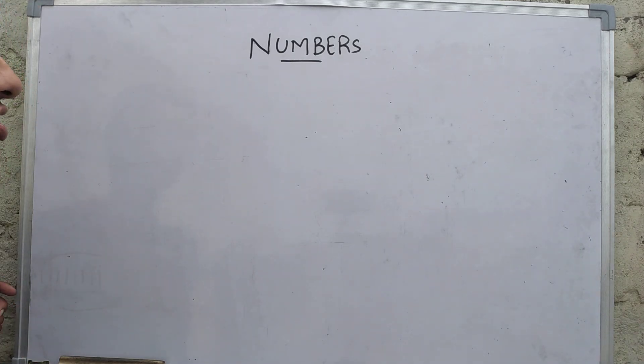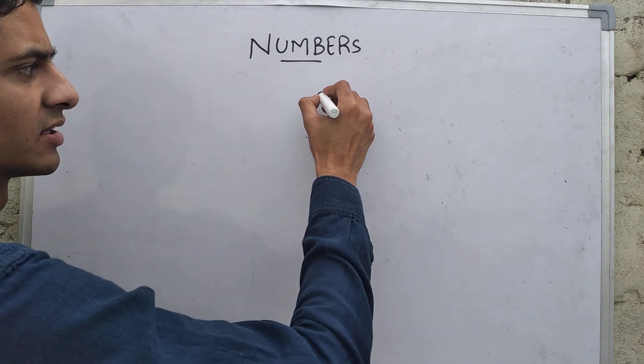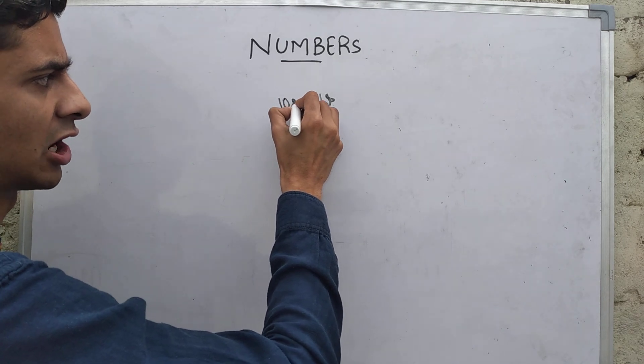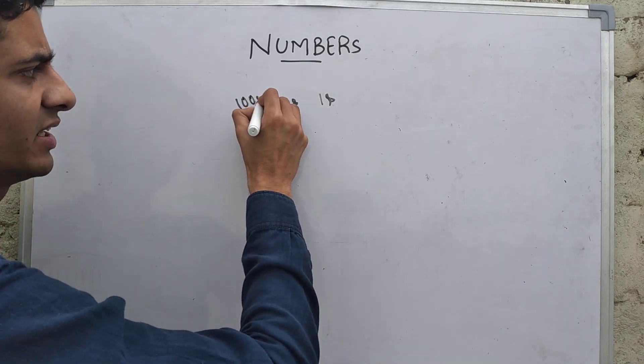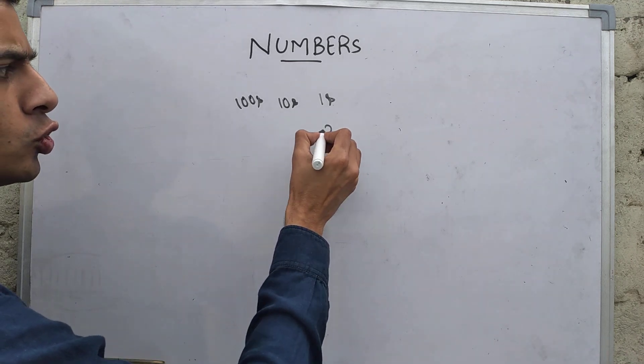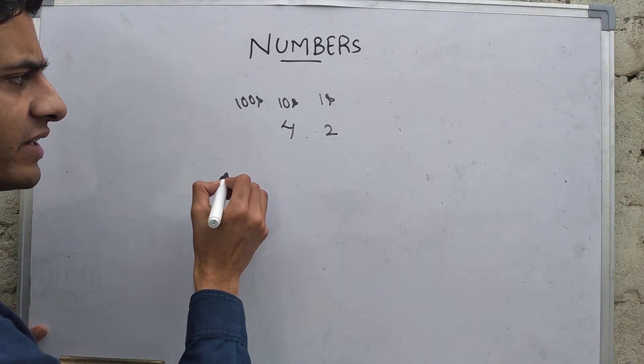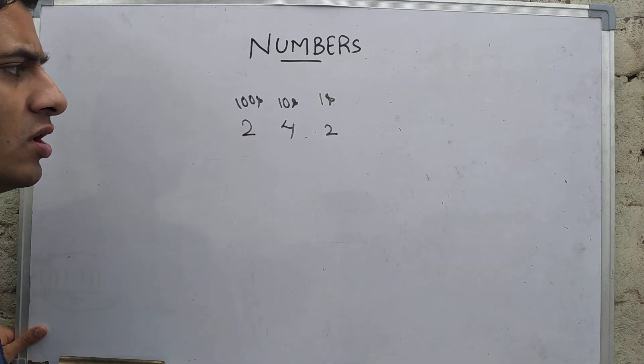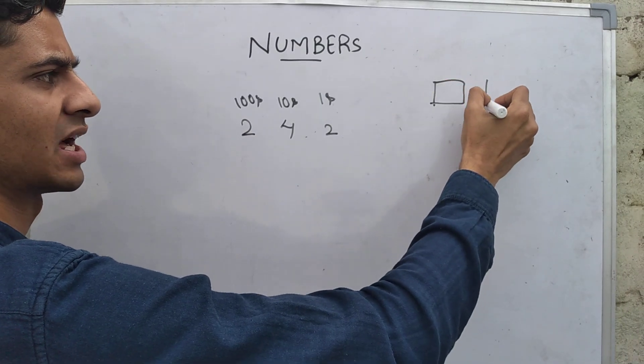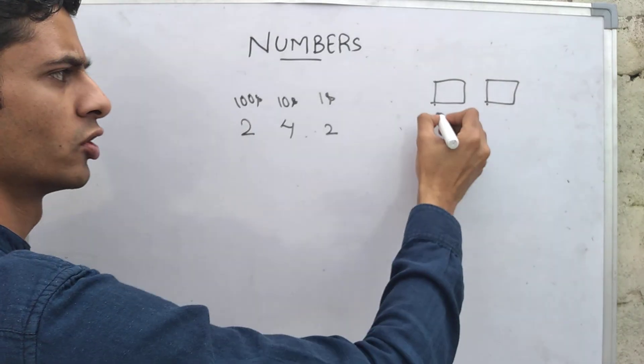Continuing further with today's topic of numbers, I have told you that we can see how many ones we have, how many tens we have, and how many hundreds we have. Suppose I am having two ones, four tens, and two hundreds only. What is the meaning of two hundreds?